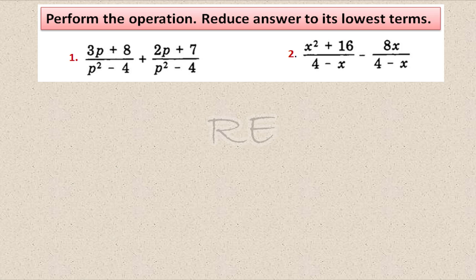For number 1, the denominators are the same, so we add the numerators: 3p plus 8 plus 2p plus 7.